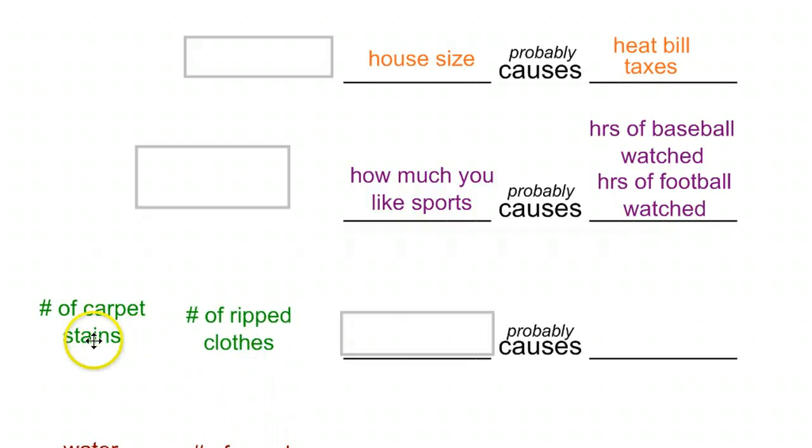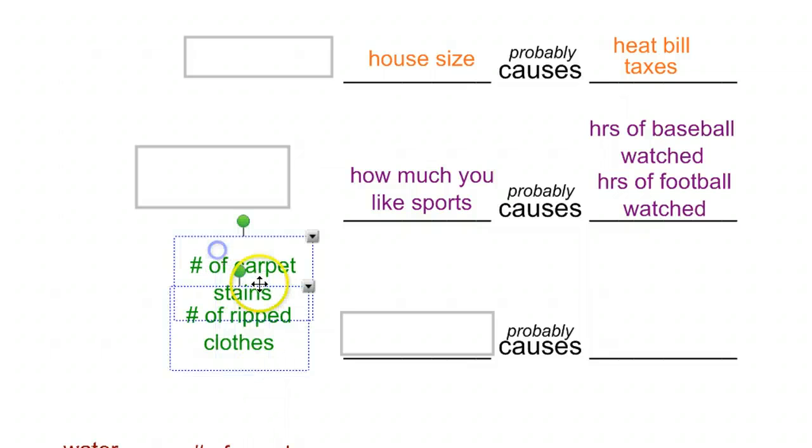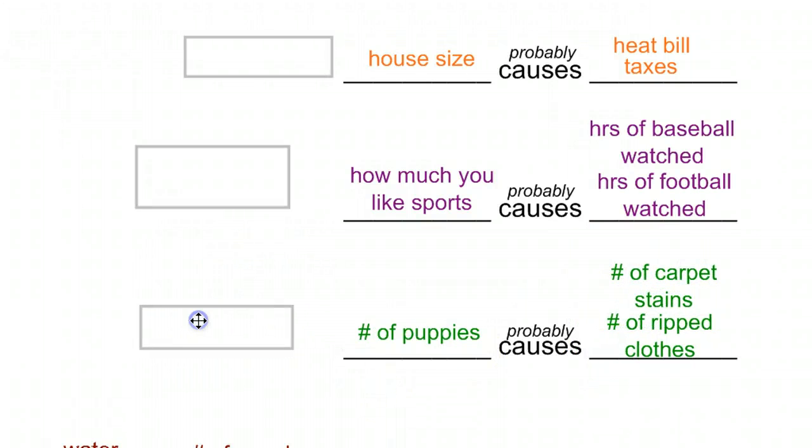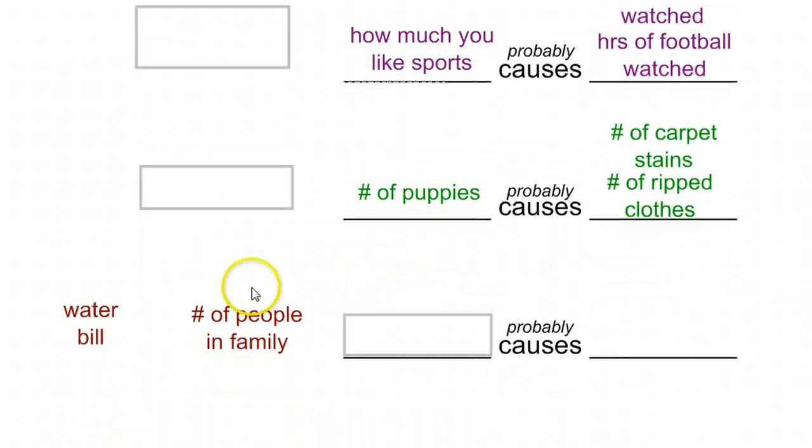This one is an interesting one. Do carpet stains cause your clothes to rip, or do your ripped clothes cause your carpet to get stained? Neither of those really makes sense. But if you are a dog owner, you would recognize both of these as being the result of having a pet. So the number of puppies that you have running around your house will probably cause you to have lots of stains on your carpet and lots of ripped clothes. I can guarantee you that's true.